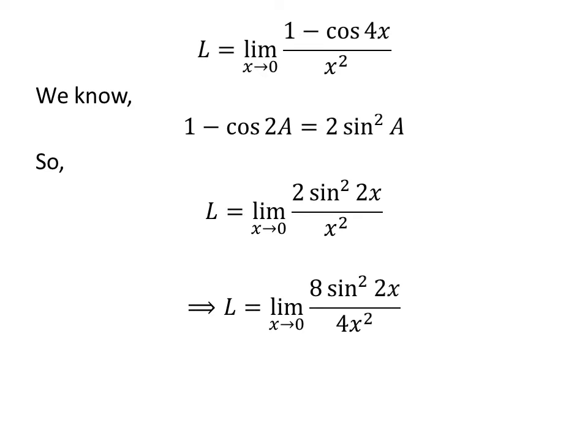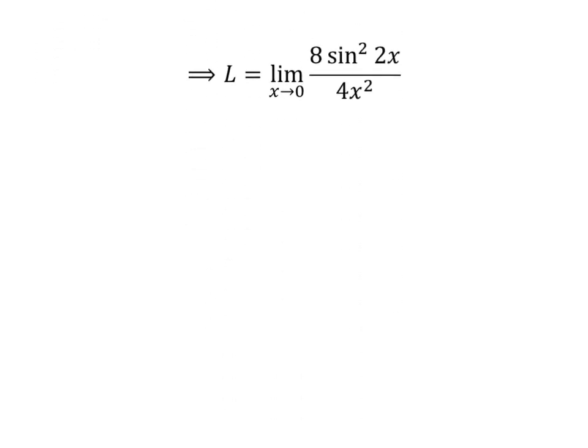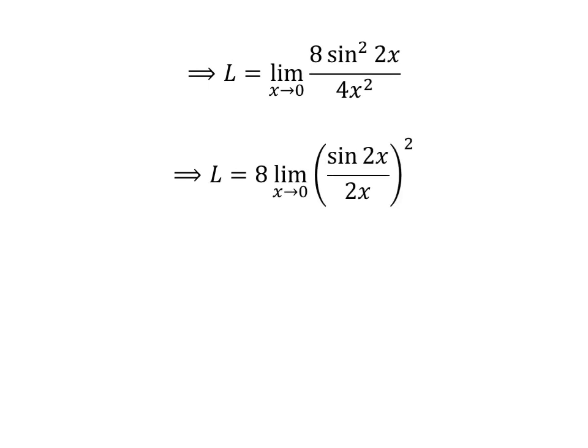As multiplying the numerator and the denominator of a fraction by a common factor does not change the value of the fraction, I have multiplied the numerator and the denominator by a common factor 4. As 8 is constant, let us take it out and we can rewrite square of sin of 2 times x upon 4 times square of x as square of sin of 2 times x upon 2 times x.